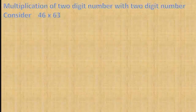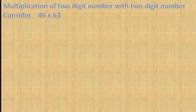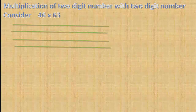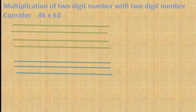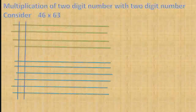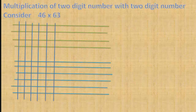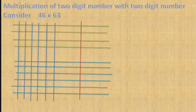Now, multiplication of 2 digit numbers with 2 digit numbers. Consider the example 46 multiplied by 63. For 46, draw 4 horizontal lines. By leaving some space, draw 6 horizontal lines. For 63, draw 6 vertical lines, and by leaving some space, draw 3 vertical lines.